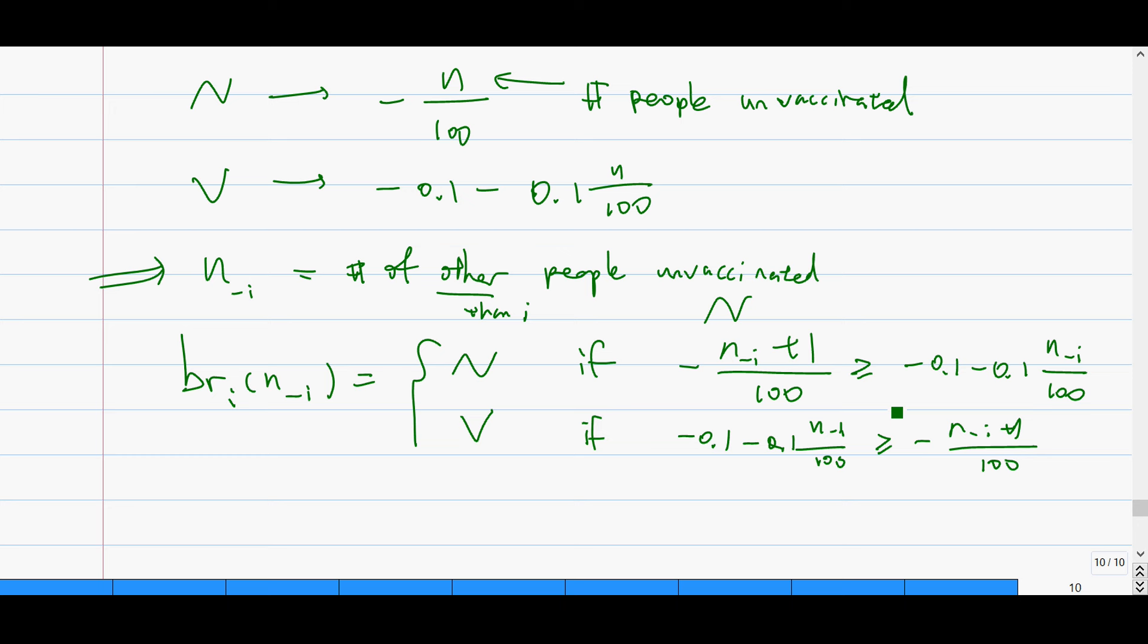But for example, in the Hunger Games video that I had, it's actually, there are intersections of the range of this A minus i. Actually, both N and V are my best responses. So don't always say solve this and then say V otherwise, because it's not always true.